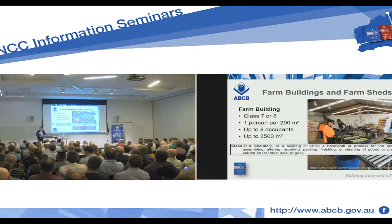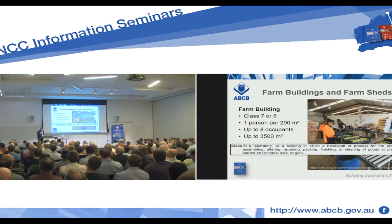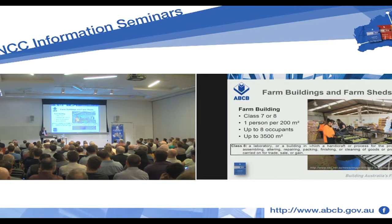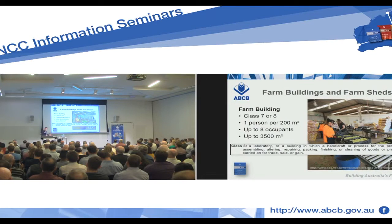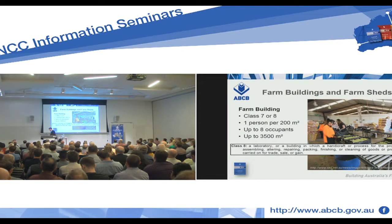This is a class 8 building, no question. There's a process going on in here — fruit packing. Goods are packed for trade, sale or gain. It's a class 8 building. The building is occupied in accordance with the parameters set out in the defined term for a farm building. Class 7 is storage, class 10 is storage, but class 8 — you're doing something in there, there's a process. So it's easy to identify that.